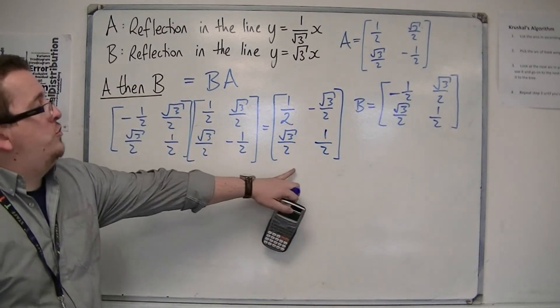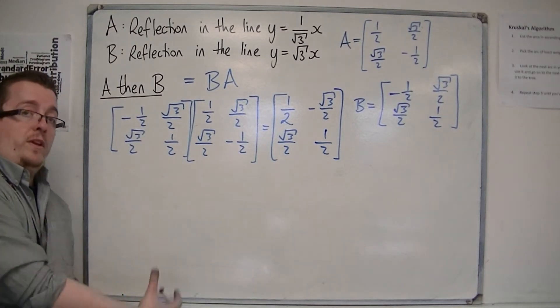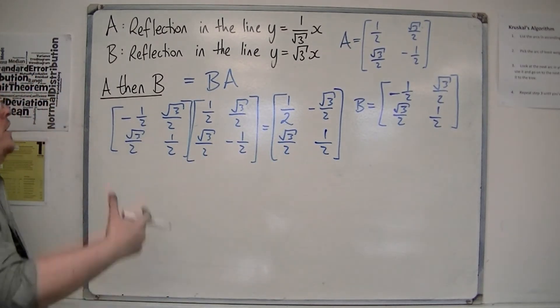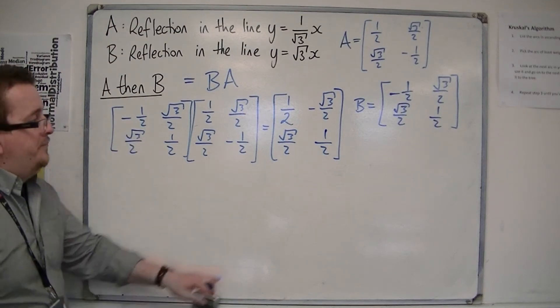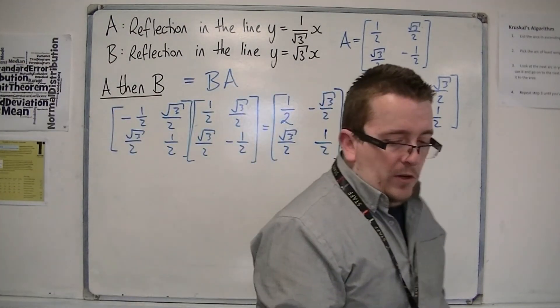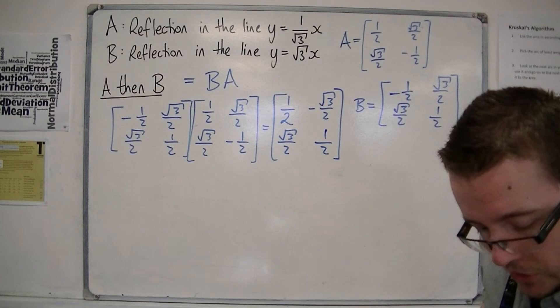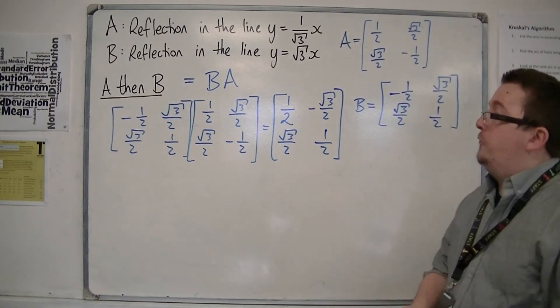This is the matrix that is the composite transformation, so the combined transformation of A, then B. I would be wanting to describe this transformation.